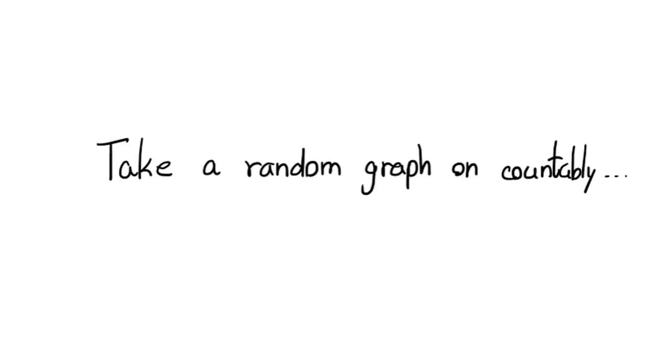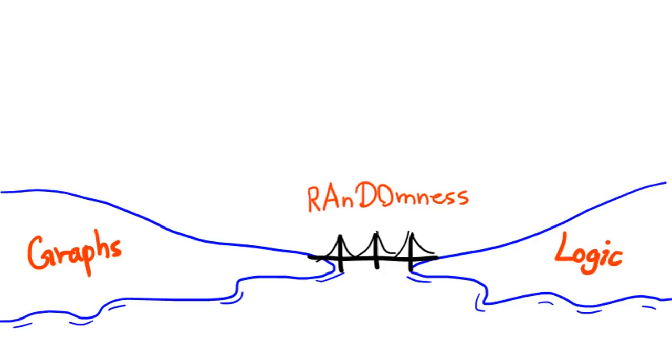So for this reason, mathematicians never say take a random graph on countably many vertices. They say take THE random graph. The legend of the Rado graph doesn't end here. It still has a load of secrets to offer, and for some deep reasons it even has connections with the logic of graphs, which I know nothing about.